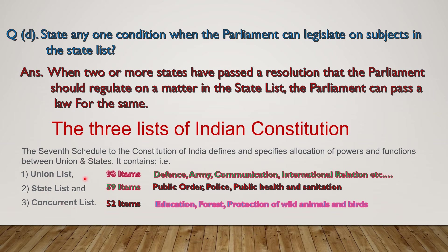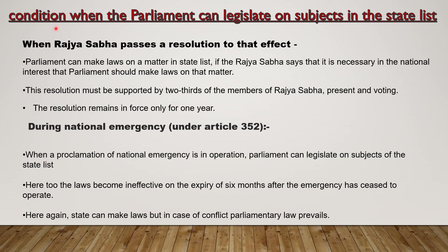Apart from these three lists, one more list is there — the Residuary List. The items which are not mentioned in these three lists come under the Residuary List. Only the Union Parliament can make laws on those items. You should also know about all the conditions when the parliament can legislate on subjects in the state list for long questions. First, when Rajya Sabha passes a resolution to that effect — Parliament can make laws on a matter in the State List if the Rajya Sabha says that it is necessary in the national interest.